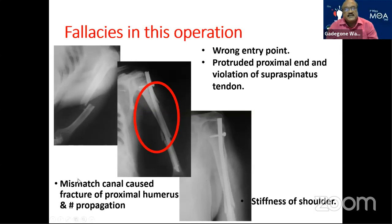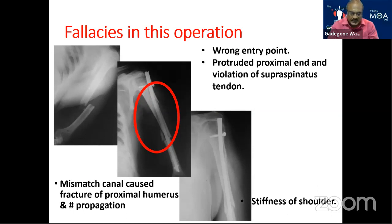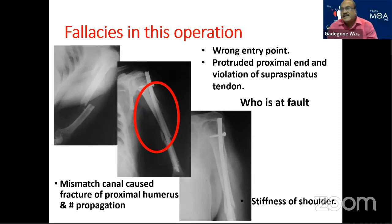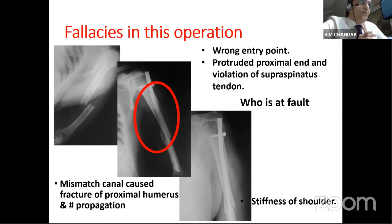Now see this picture. This is a transverse diaphyseal fracture of the humerus. You can see the nail entry point is wrong — protruded proximal end and violation of the supraspinatus tendon. Mismatch of the canal leading to fracture of the humerus shaft at the entry side, as well as fracture propagation, ultimately leading to stiffness of the shoulder. I want to ask everybody, faculty and moderators: who is at fault? Proper execution of the surgical technique has to be the first thing in all fracture fixations, and possibly the technique employed was not what it should be.